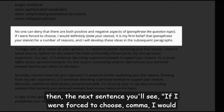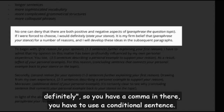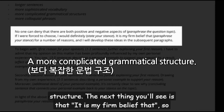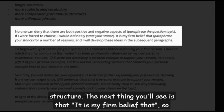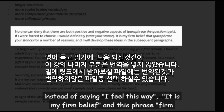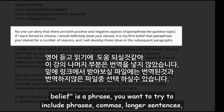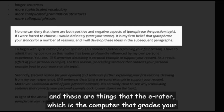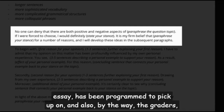The next sentence uses a conditional: 'If I were forced to choose, I would definitely...' — a comma and a more complicated grammatical structure. Then instead of saying 'I feel this way,' you use 'It is my firm belief that...' The phrase 'firm belief' is a colloquial phrase. You want to include such phrases, commas, and longer sentences — these are all things that the e-reader, the computer that grades your essay, has been programmed to pick up on.